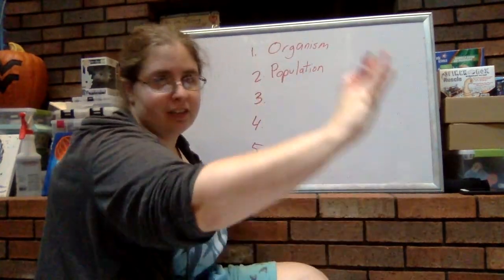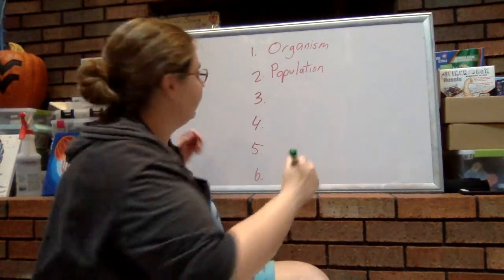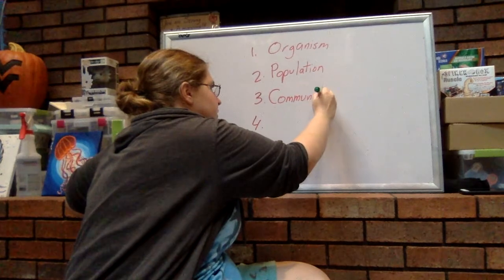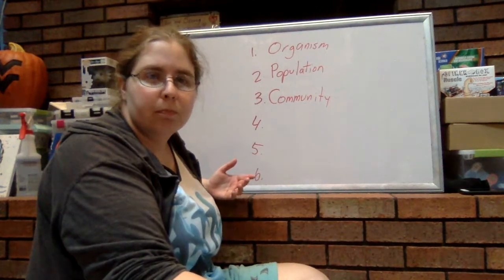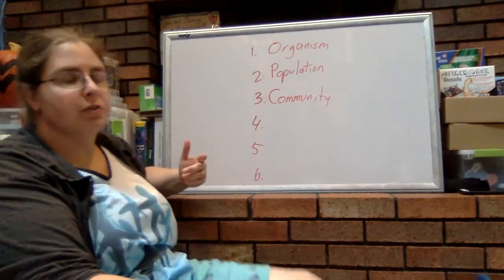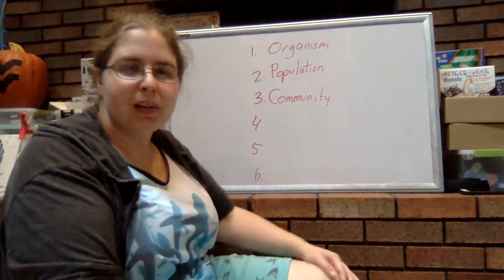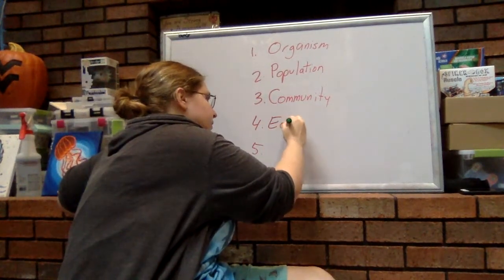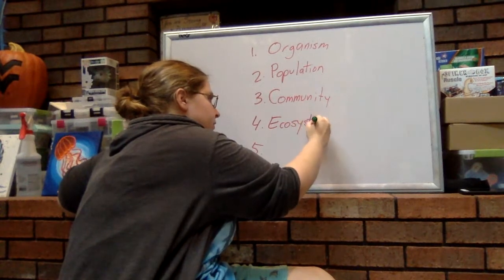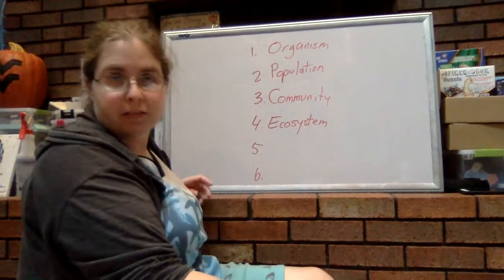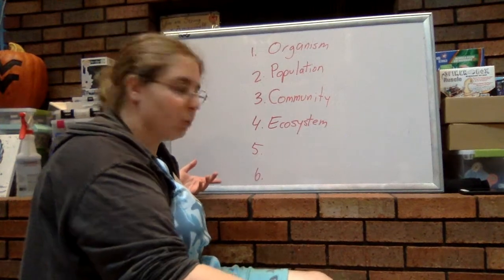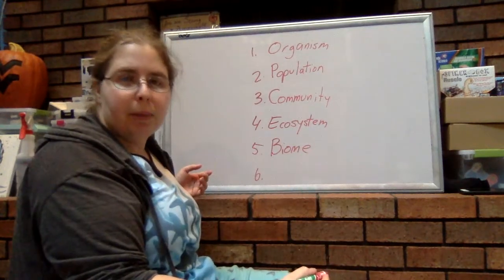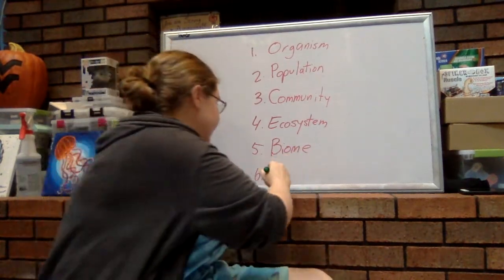All of the populations living in an area would be the community. Now the community, which remember is all the possible populations, meaning all the living things, plus all of the non-living things, that would give us our ecosystem. All of the similar ecosystems across the entire world would be a biome, and all of the biomes would be the biosphere.